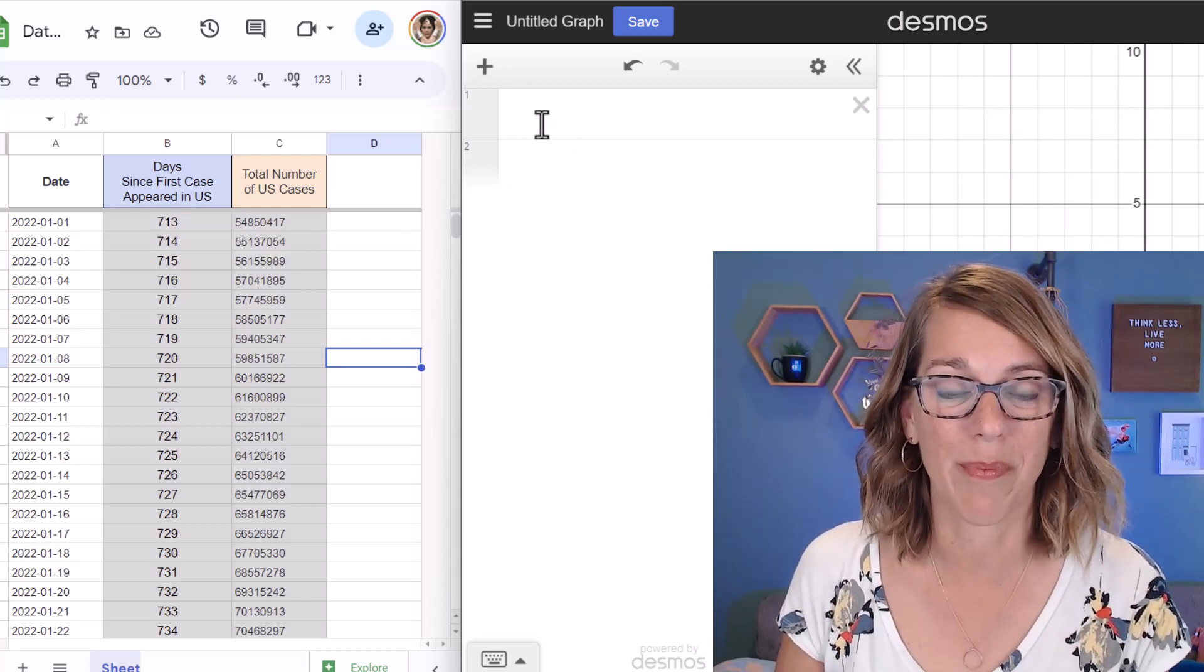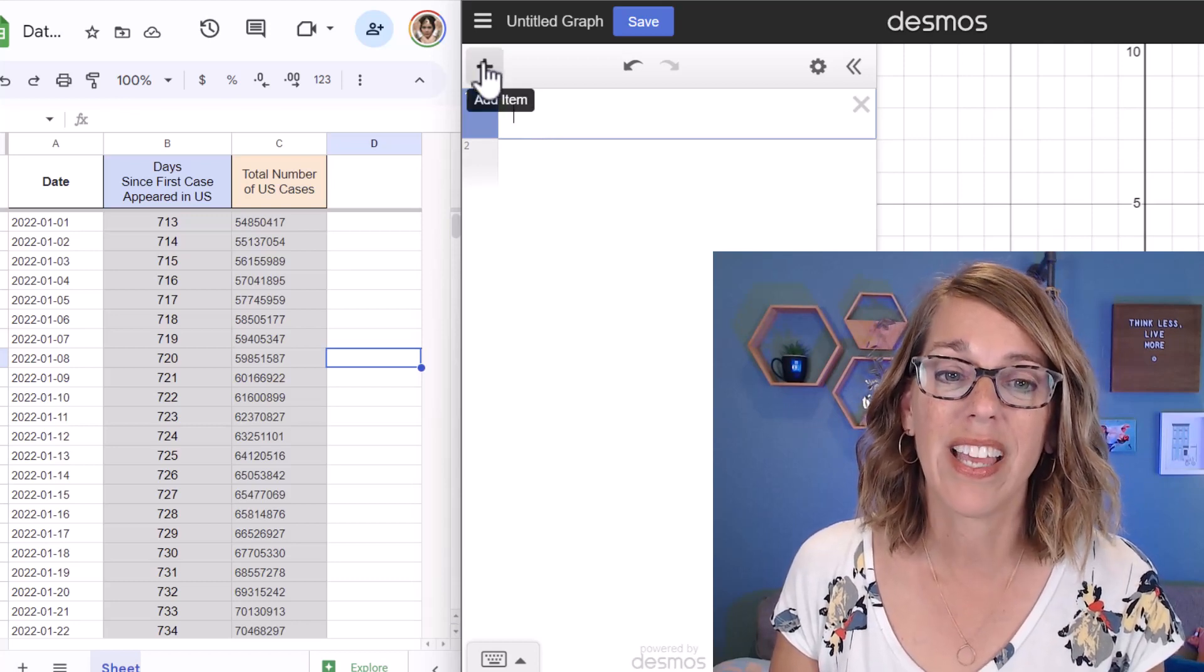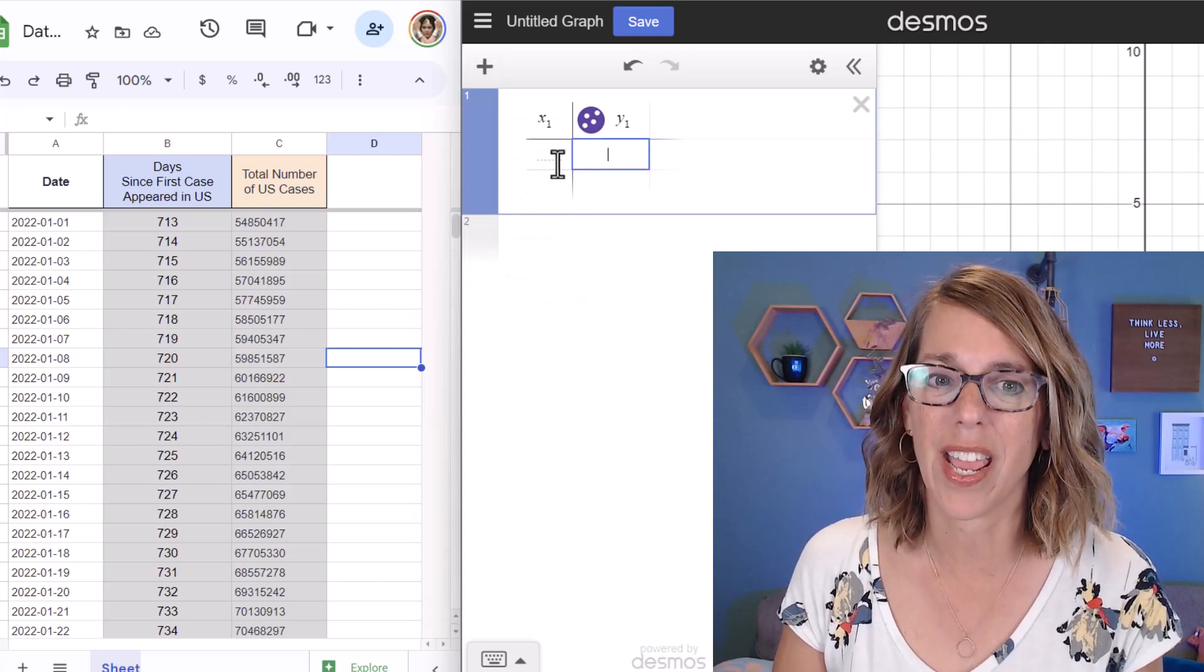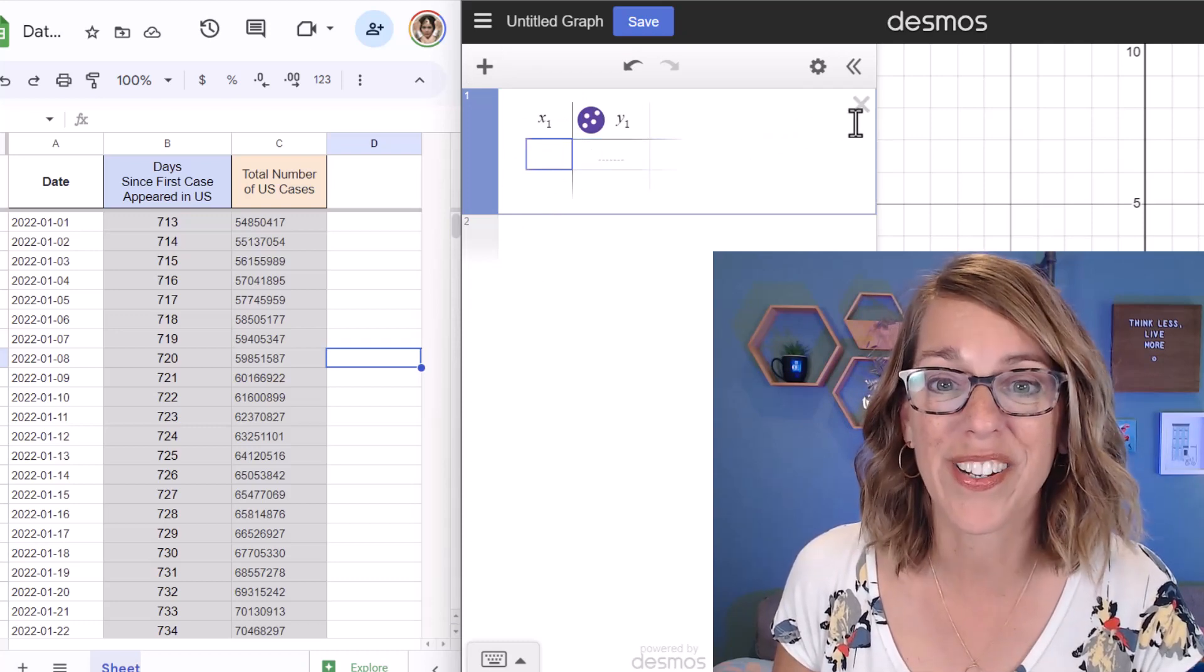If you were going to type it into Desmos, you would grab an empty cell and click the plus sign and add table, and then you can go ahead and start to type your data values here. We don't want to do that.